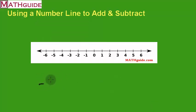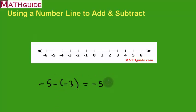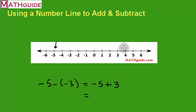Our last example: negative five minus negative three. I'm going to change this to an addition problem — start with negative five, change the subtraction to addition, take the opposite of the second number. Negative three changes to positive three. I start at negative five and move three units to the right, because positive numbers move to the right: one, two, three. The answer is negative two.